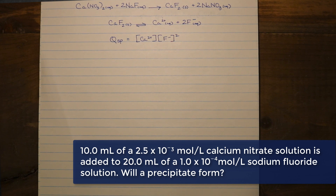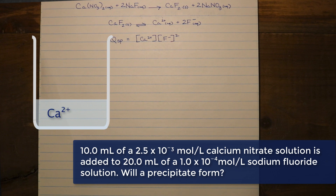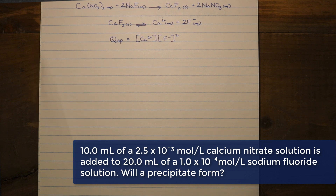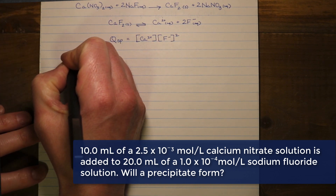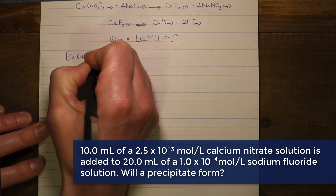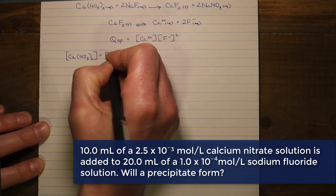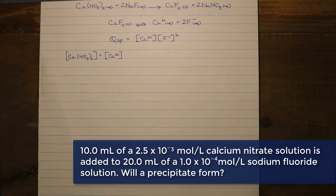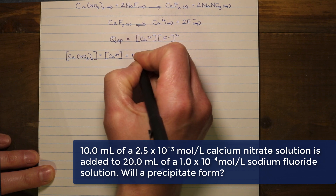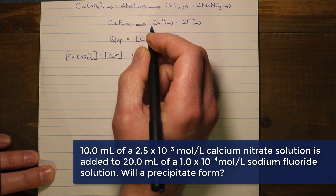This question is a little tricky because both volumes are fairly significant. Adding 10 milliliters to 20 milliliters gives a total volume of 30 milliliters, which is going to impact the concentration of any ions in the reaction mixture. We also need to understand that calcium nitrate dissociates in a one-to-one ratio with calcium ions — for every calcium nitrate that dissociates, we get one calcium ion and two nitrate ions. So the concentration of calcium nitrate equals the concentration of the calcium ion.